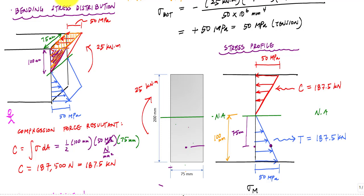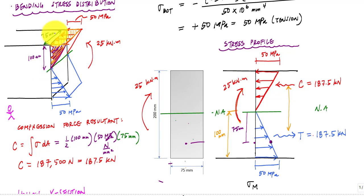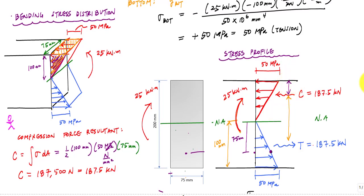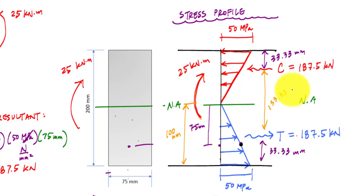On the 2D stress profile, I describe the resultant as C. Recalling the idea of a force couple from statics, there would also be a tension force resultant T. From force equilibrium, T equals C = 187.5 kilonewtons. There's also moment equilibrium — the force couple should equal 25 kilonewton-meters. The force resultant acts at the centroid of the wedge volume, which for a linear wedge is one-third of the 100 mm from the tip, so 33.33 mm from the top and bottom, making the moment arm 133.33 millimeters.